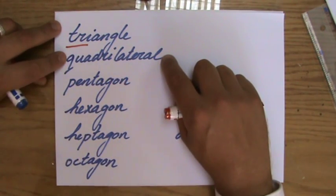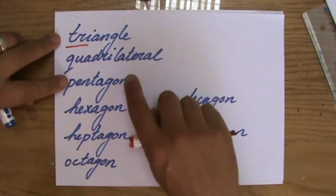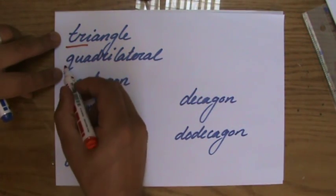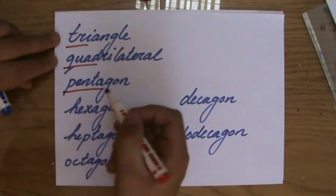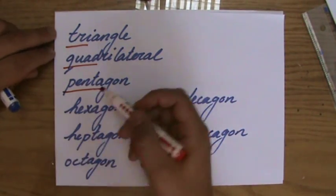A quadrilateral. Quad means four, like a quad bike, a four-sided polygon. Pentagon, that's a five-sided polygon. A pentagram.